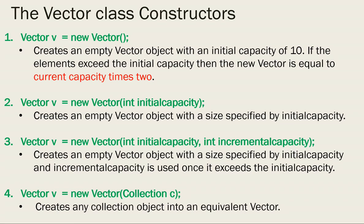Under the vector class, there are about four constructors that we have to talk about. The first constructor does not have any parameters or arguments. The second one has one parameter, the third one has two parameters, and the fourth one has one parameter. We will go through them one by one.